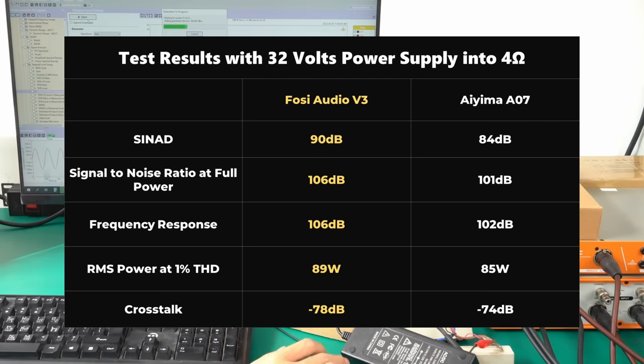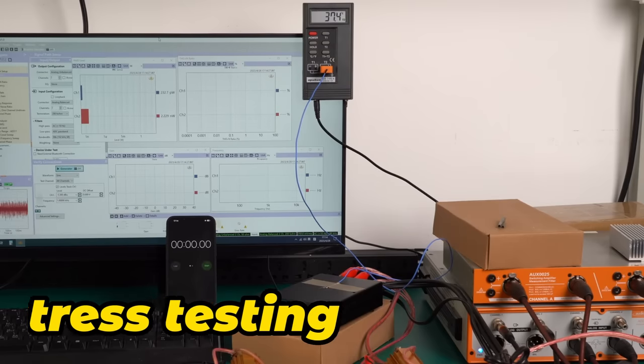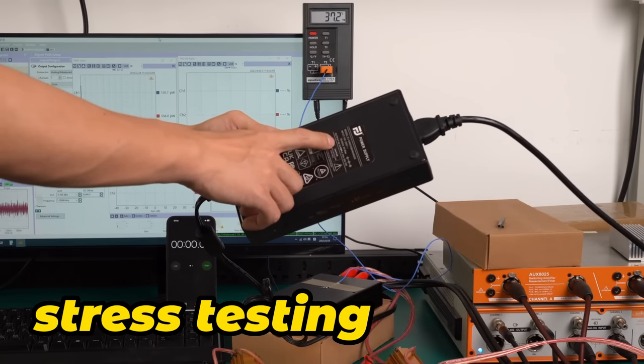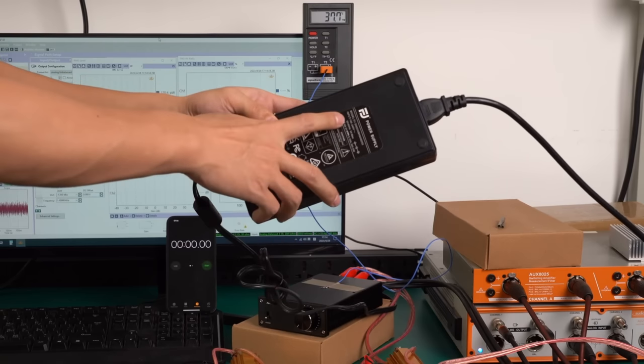However, parameters alone don't tell the whole story. The A07 has a significant issue that it quickly goes into overload protection and shuts down when connected to a 48 volts power supply. I'll also test if the V3 has a similar issue. For this segment, I'm using a larger 48 volts 6.25 amps power supply and simulating a 4 ohm speaker load.